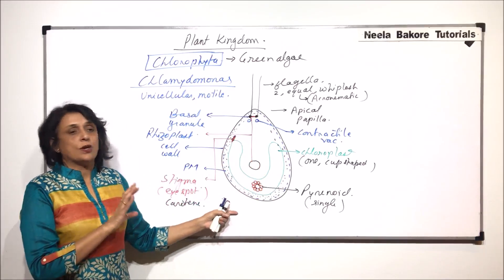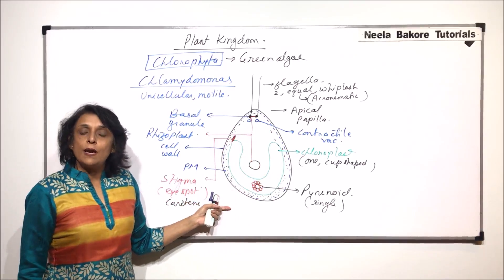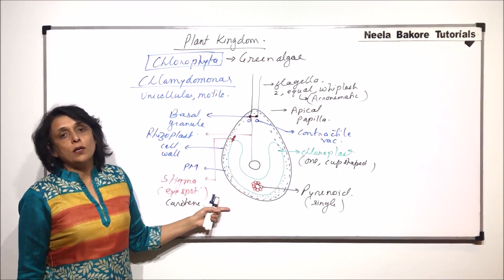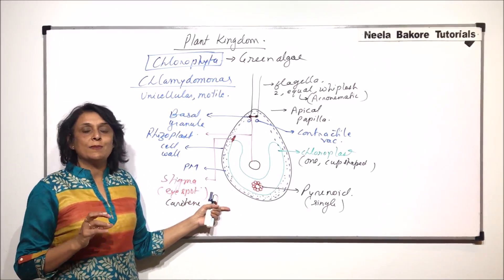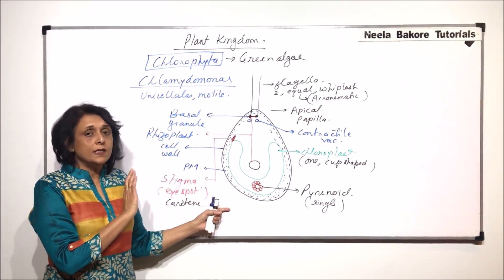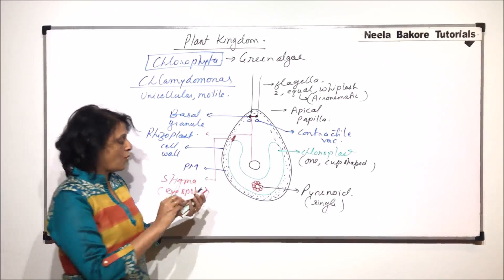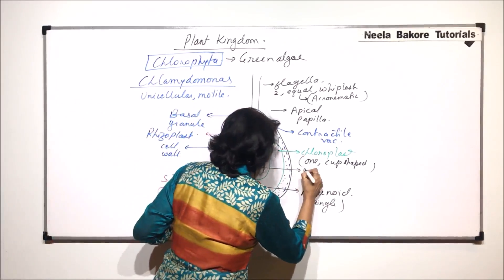This is the structure and it is a typical eukaryotic cell. So all other organelles like endoplasmic reticulum, Golgi and everything is present which we normally do not draw. This is the nucleus.